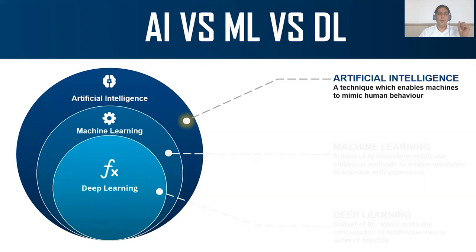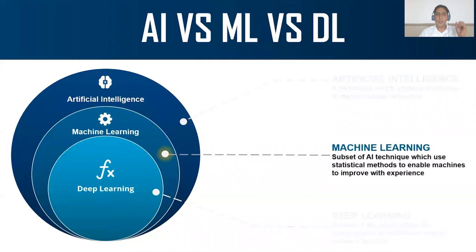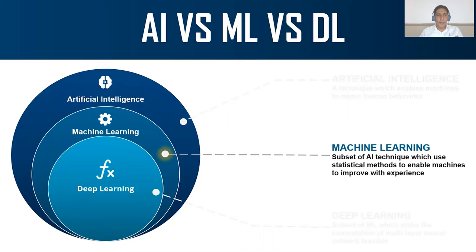Machine learning is just a subset of artificial intelligence. It uses statistical methods to enable machines to improve with experience. That is machine learning.